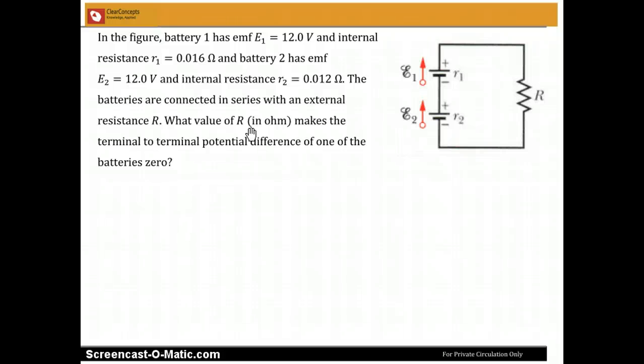We have to find the value of R which makes the terminal to terminal potential difference of one of the batteries zero. So obviously both won't become zero. We need to also therefore determine which is the battery that is going to have its terminal to terminal potential difference zero.